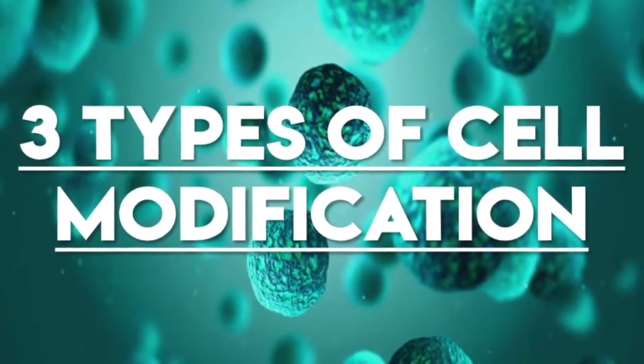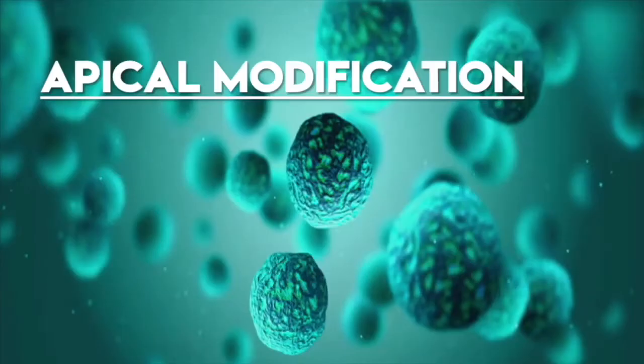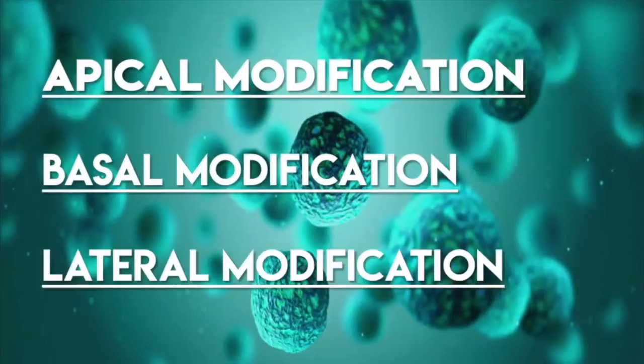And there are three types of cell modification: the apical modification, the basal modification, and lastly, the lateral modification.